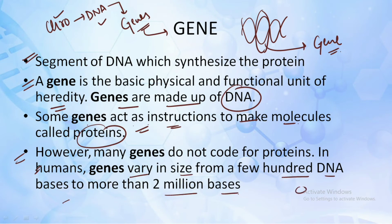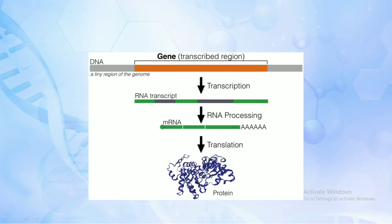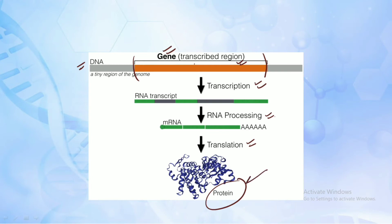In humans, gene size varies from a few hundred bases to more than two million bases. Any portion of the DNA that is the transcribed region is given the name of gene. This gene goes through the process of transcription, then RNA processing, then translation, and finally we have the product — the protein. So that was about what a chromosome is, what DNA is, and what a gene is.